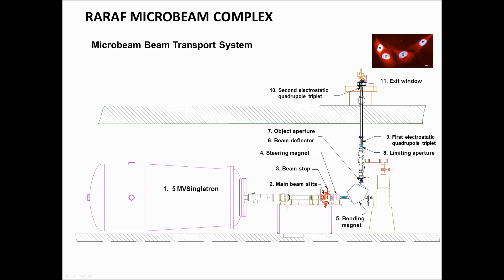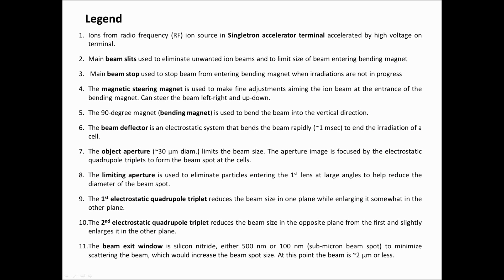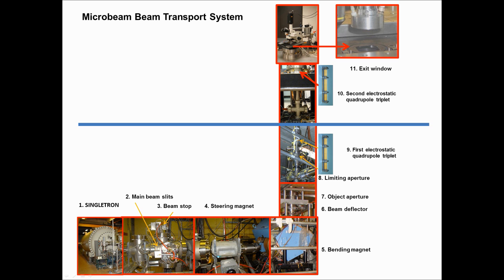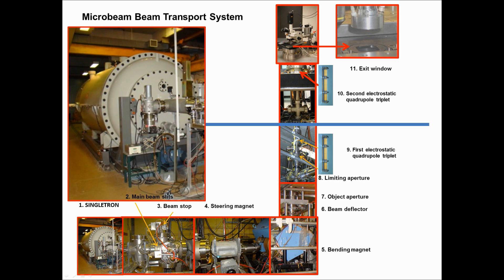So the microbeam transport itself, we have the singletron, we have a beam line, we have some beam defining slits here. We have a 90 degree magnet. The object aperture is located just above that. Limiting aperture is located just before the electrostatic, the first electrostatic triplet. 27 inch concrete floor, the second triplet is here and the end station with its exit window is there and that's where the irradiation takes place. So let's look at a little bit of detail on these pieces.